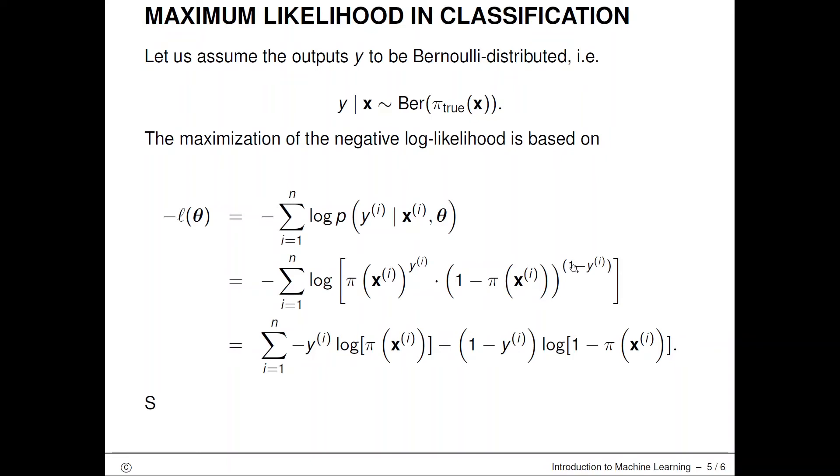Let's do a case-by-case analysis. If y is one, (1 minus y) becomes zero so this term becomes one and we can disregard it. The only thing left is pi(x). If y is negatively labeled, this drops out, this becomes one, and the only thing left is (1 minus pi(x)). This neatly works out.